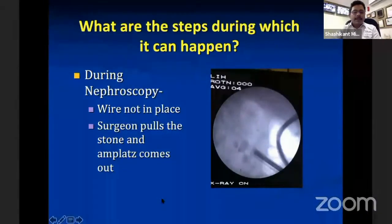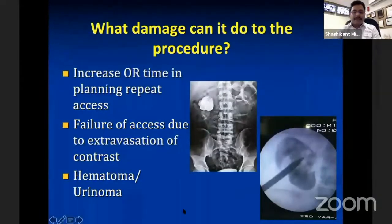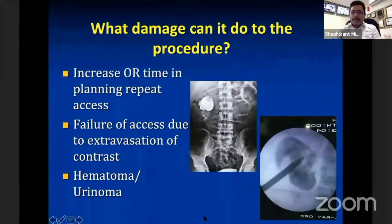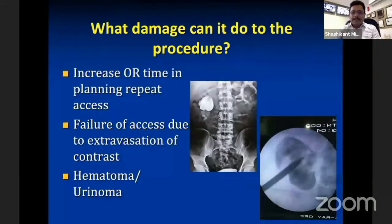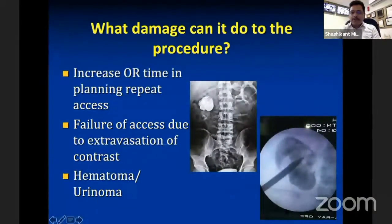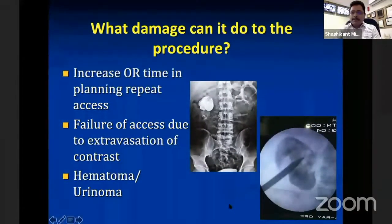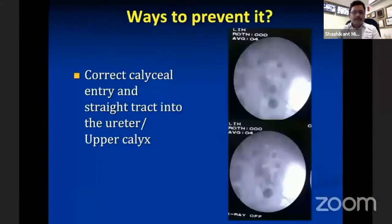Track loss can increase your operating time because you would require planning a repeat access. Sometimes there is failure of access because contrast extravasation makes the entire system messy when everything was going smoothly. Hematoma and urinoma formation may also happen.